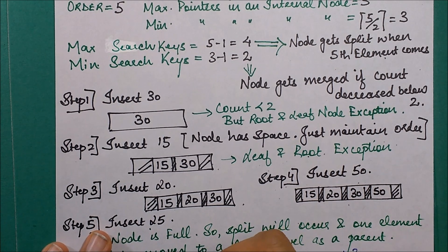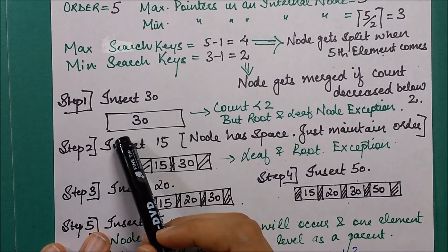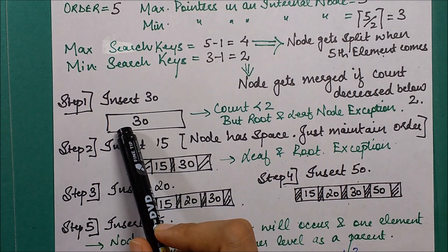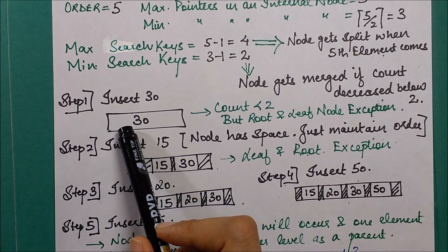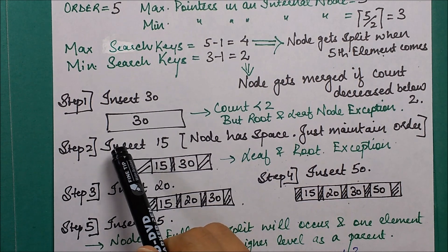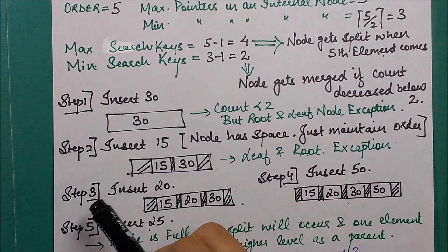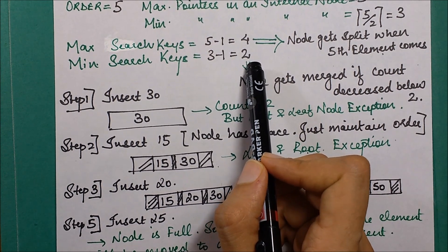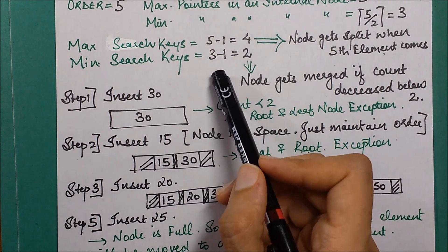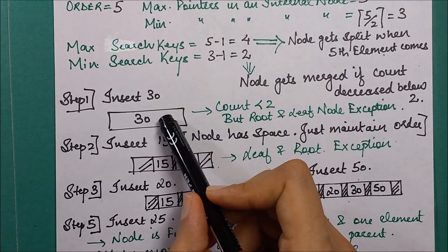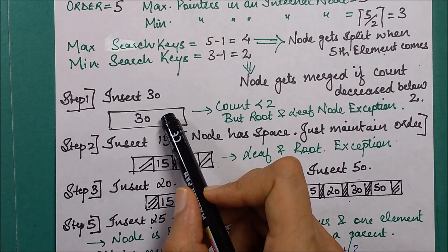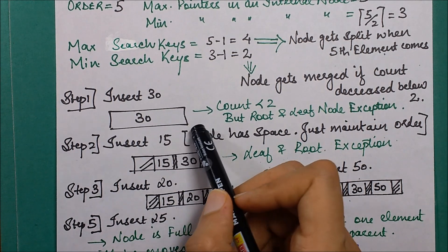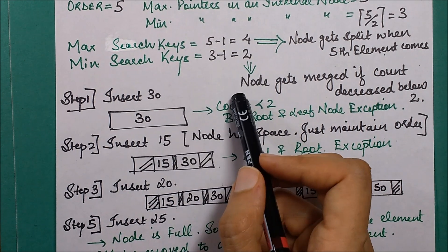At this point, the count is less than 2, but this is allowed because this node is both the root and a leaf node. When there is only one single node in the tree that is both root and leaf, the exception is allowed — the count of search keys can be less than 2.